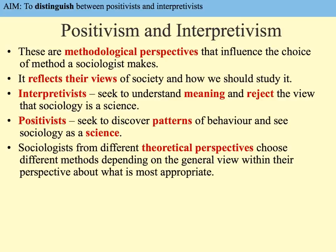The methodological perspective that a sociologist chooses will reflect their views of society and how we should study it. If you're a macro sociologist who likes to study society on a big scale, what type of methodological perspective do you think you would choose — positivist or interpretivist methods? Interpretivists seek to understand the meaning behind a human action and reject the view that sociology is a science and should aspire to be a science. This is a big debate in sociology.